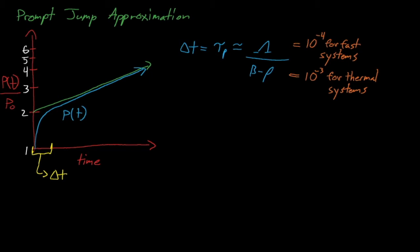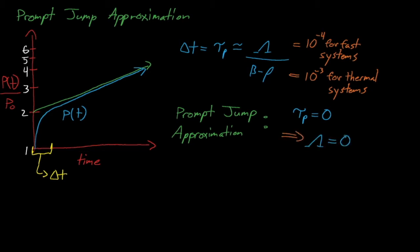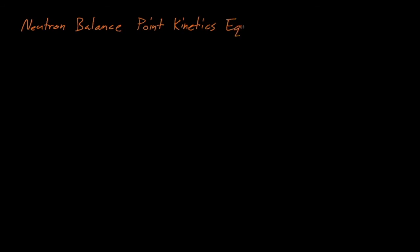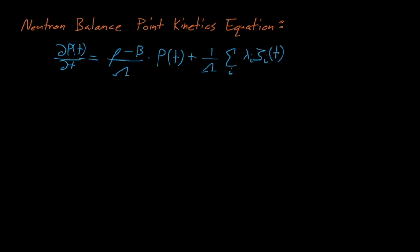For the power to assume this asymptotic shape, we must have a different initial power at time t equals 0. This new adjusted initial power is equal to the y-axis intercept of the asymptotic curve, and we denote it using the adjusted p0 term, where the 0 symbol has been raised to become a superscript. For the prompt jump to take place immediately, it means that tau sub p must approach 0. The only way this can happen is if we assume that the neutron generation time also approaches 0. The prompt jump approximation makes this assumption and takes the limit as lambda approaches 0 of lambda times the point kinetics neutron balance equation.